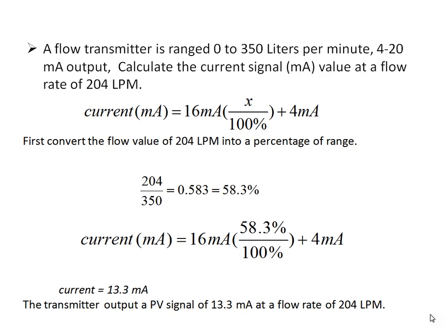Here, X is the manipulating variable. In this next example, a flow transmitter with a range of 0 to 350 liters per minute gives a 4 to 20 mA output. We need to calculate the output signal current when the flow meter reads 204 liters per minute. Using the equation: current = 16 mA × percentage variable + 4 mA. First, we convert 204 lpm into a percentage value, which gives approximately 58.3%. Substituting this into the equation, we get a current of approximately 13.3 mA.